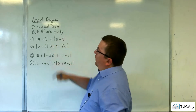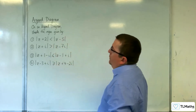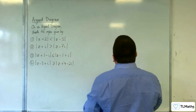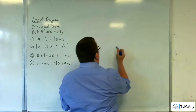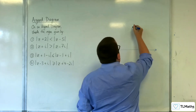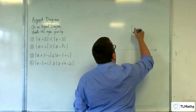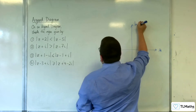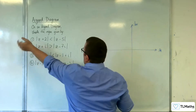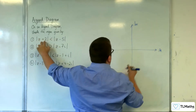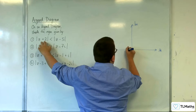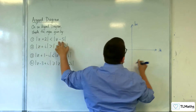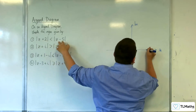So with this first one, the modulus of z plus 2 is less than the modulus of z take away 5. It's quite easy to find the perpendicular bisector. We've got minus 2 on the real axis, and then we've got 5 on the real axis.